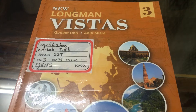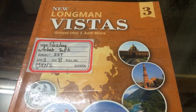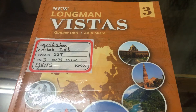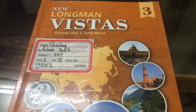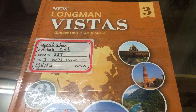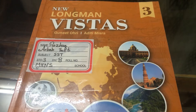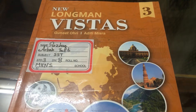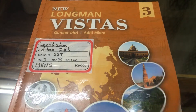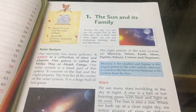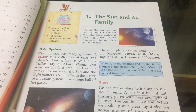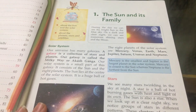Hello, Lili here. Today we are starting with Class 3, Chapter 1 of your SSD textbook. The name of the chapter is The Sun and its Family.